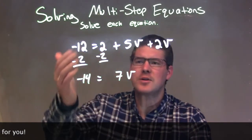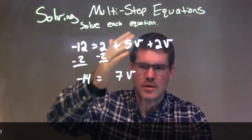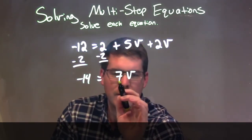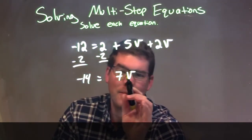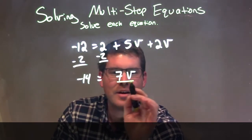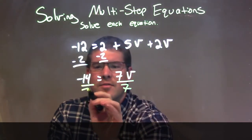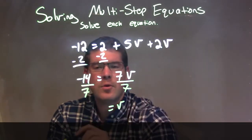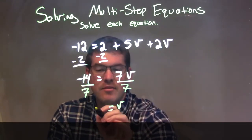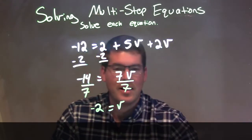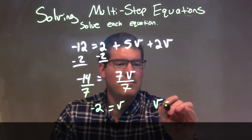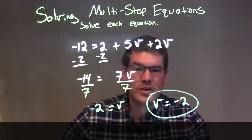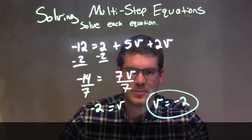You can do each step individually, but I like to combine them here. So now I'm dividing by 7 because I'm multiplying by 7 times v. Divide by 7 on both sides, and I'm left with v by itself on the right. Negative 14 divided by 7 is negative 2 on the left. I can rewrite this to have v first, so our final answer is v equals negative 2.